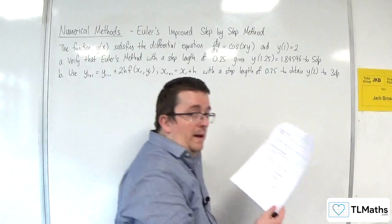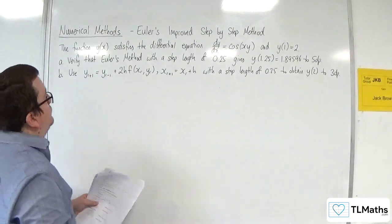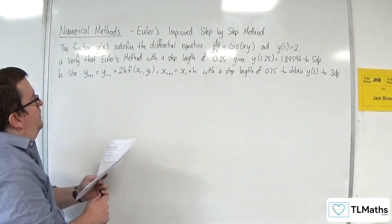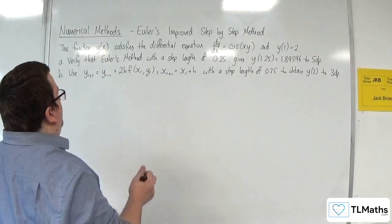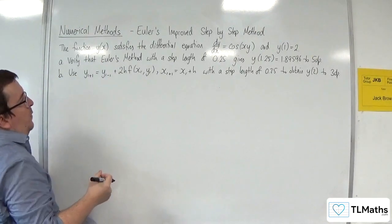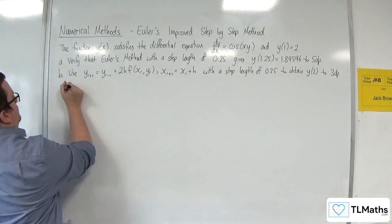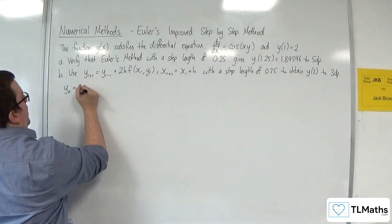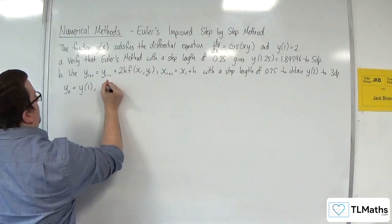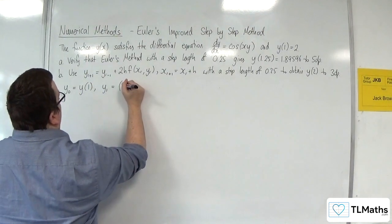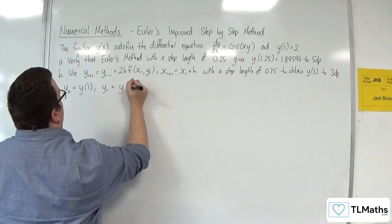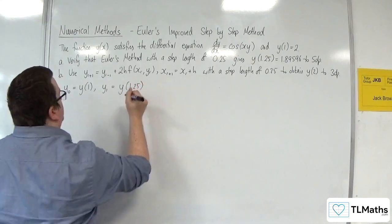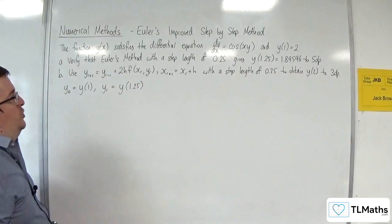Okay, so Euler's method is in the formula booklet. So we have that y of 0, or y0, is equal to y of 1, and we're going to have y1 as equal to y of 1.25. Okay, just to get the notation right.